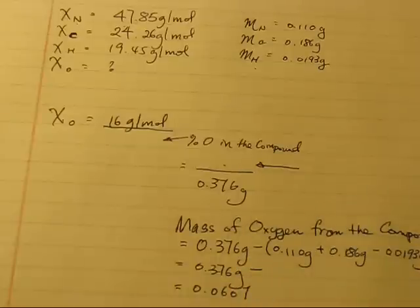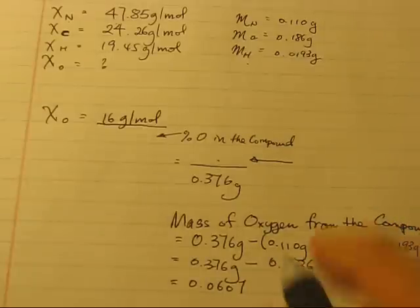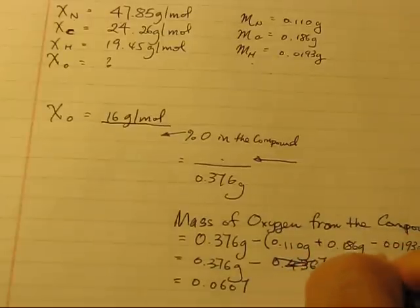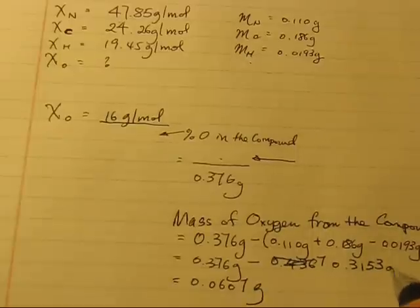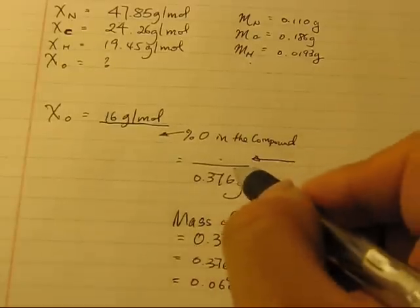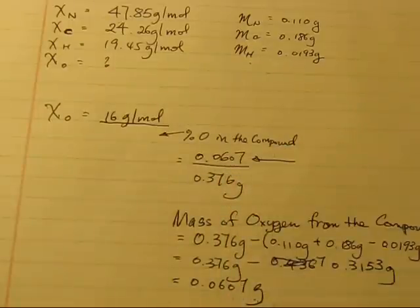Okay, I missed this one here. That part should be 0.436, oh no, it should be 0.3153. Okay? So, we now have the mass of oxygen, and we can put it right into here, 0.0607 grams.